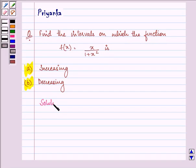Let us rewrite the given function once again. We have f(x) equal to x upon 1 plus x square.